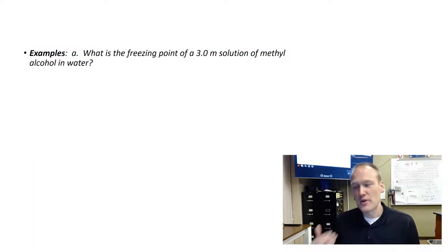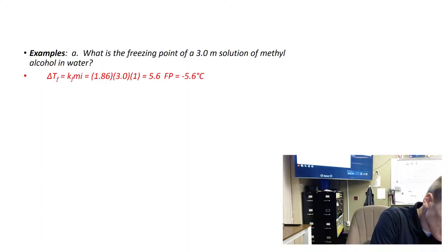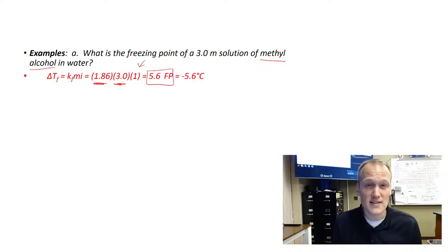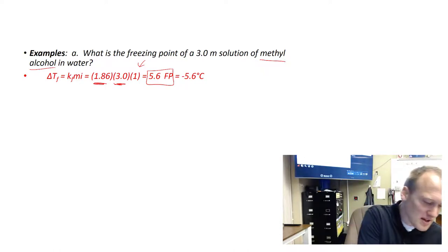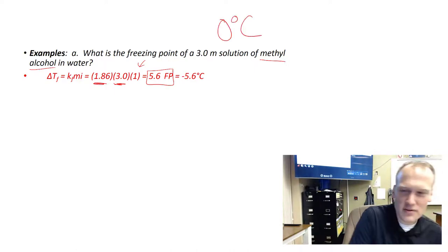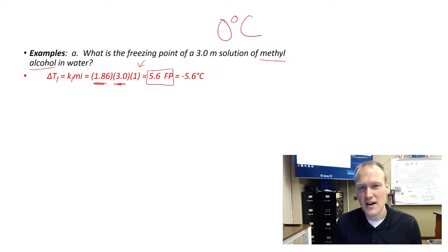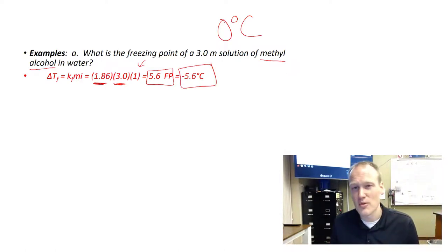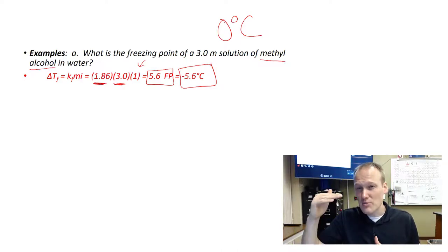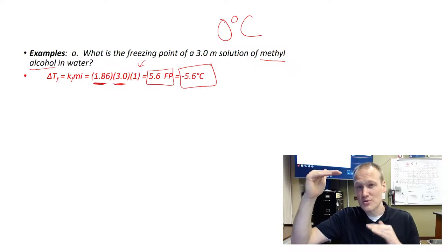What is the freezing point of a 3.0 molal solution of methyl alcohol in water? We have 1.86 times our 3.0 molal solution, and methyl alcohol does not dissociate so that's only one particle. We get an answer of 5.6 degrees, meaning the freezing point will be depressed 5.6 degrees. The normal freezing point of water is 0 degrees Celsius, so we subtract that 5.6 from 0 because that's how much it's depressing. The new freezing point is negative 5.6 degrees Celsius. It's really important that you keep boiling point elevation and freezing point depression separate. With boiling point you're adding to 100 and with freezing point you're subtracting from zero.